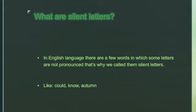Just like here: 'could,' 'know,' 'autumn.' In 'could,' there are five letters: C, O, U, L, D. We pronounce four letters: C, O, U, D. But we do not pronounce the L. We pronounce it as 'could' not 'could.' Means L is silent here — L is not pronounced here.